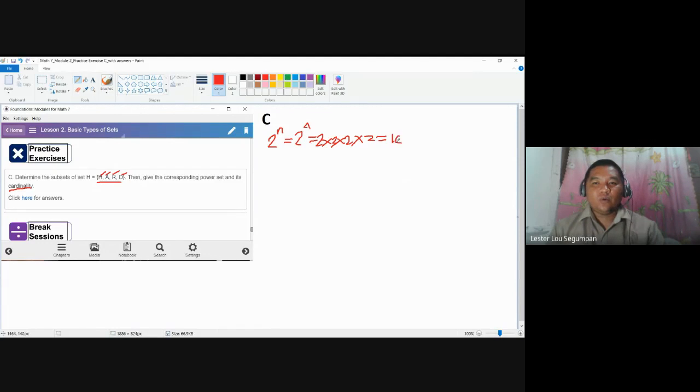In short, we need to get 16 subsets of set h containing letters h, a, r, and d. And we need to come up with a set containing all of the 16 for our power set.